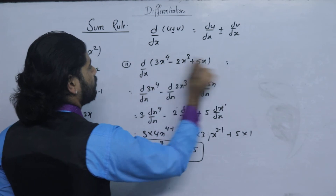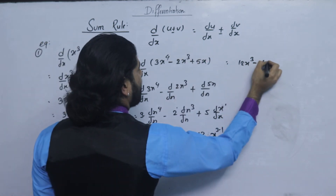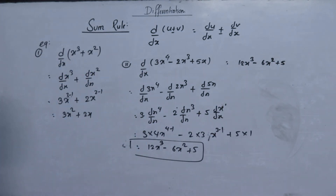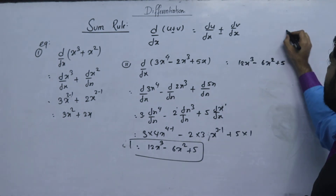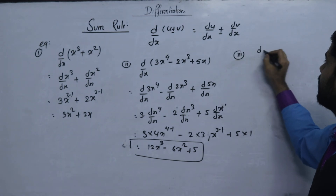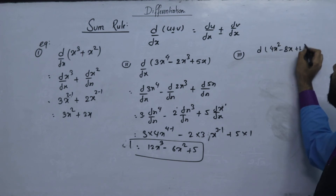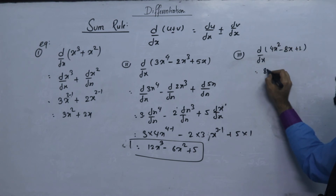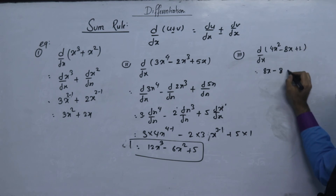I am going to write 4. 3 is equal to 2x, 1 is equal to 3, minus 3 is equal to 6x, 1 is equal to 2, plus 5. I am going to write 4x squared minus 8x plus 1. 4x squared minus 8x plus 1 is equal to 0.